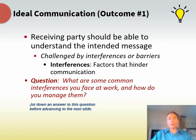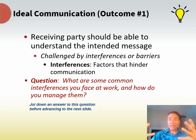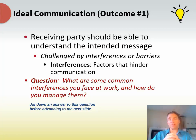In the ideal world, the receiving party understands your message and has everything they need to execute — it's not vague, not unclear, and it's in a positive tone. What prohibits that from happening? Interferences — factors that hinder communication. It could be distraction, someone on their phone, bad timing, or holding a meeting right after lunch when everyone's tired. Think about the different interferences you face at work and how you manage them. That may be one of your Canvas discussion questions this week.